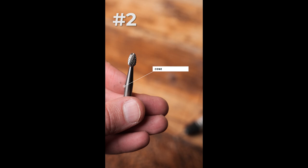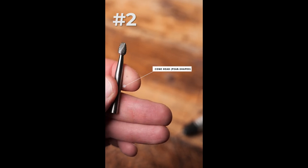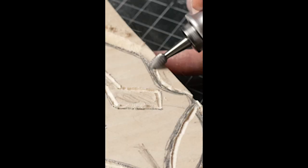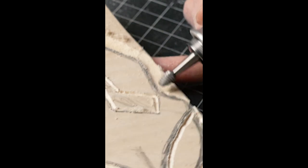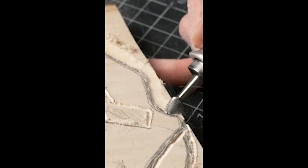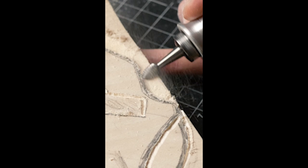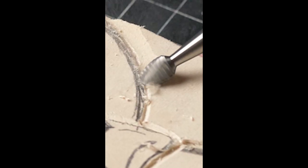Number two, the Cone Burr. This is great for removing a lot of stock or carving in angles or inclines. I use this to go around the edges of my design and to remove a lot of stock and just to clean up a lot of the mess that's left from other burrs.